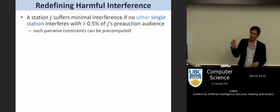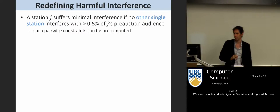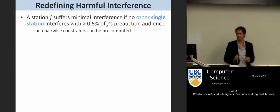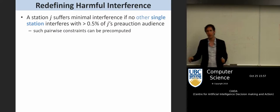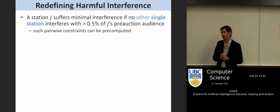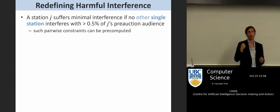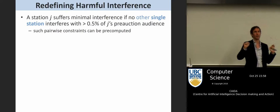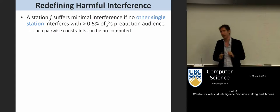Something I'm really happy we persuaded the FCC to do: redefine harmful interference in terms of pairwise constraints. A station suffers minimal interference if no other single station interferes with more than half a percent of their service area. It might be that in aggregate you get more interference, but every individual station doesn't interfere with you more than a little bit. The benefit is I can make these pairwise constraints offline — I can enumerate all the pairs offline. That took many months of computer time to grind out all pairwise constraints, but they did it once and then we had them.